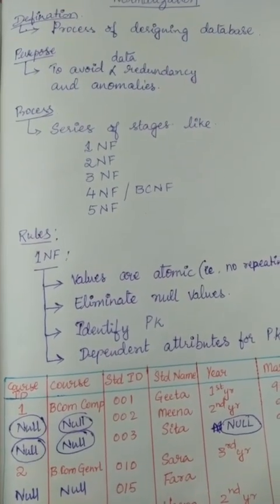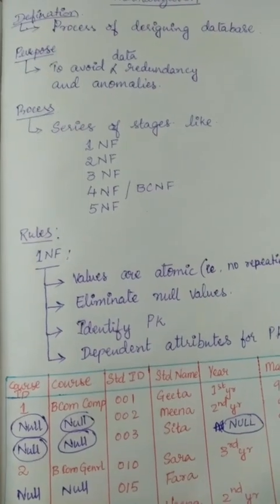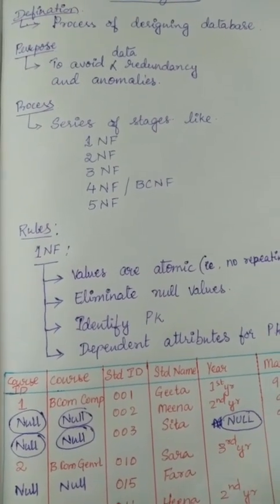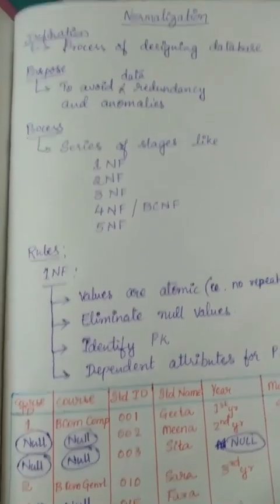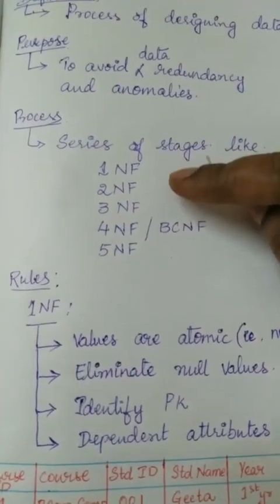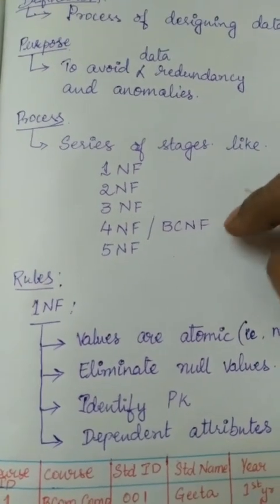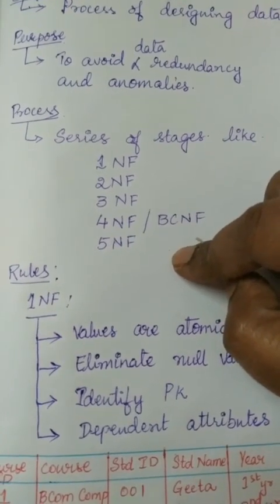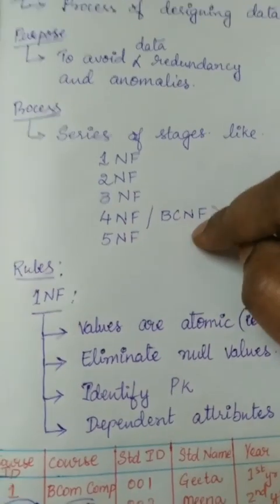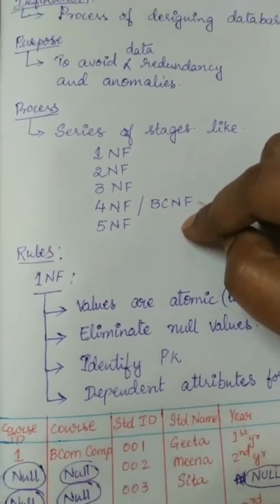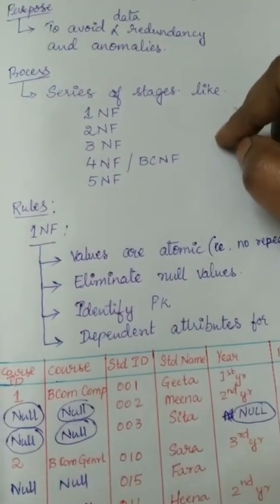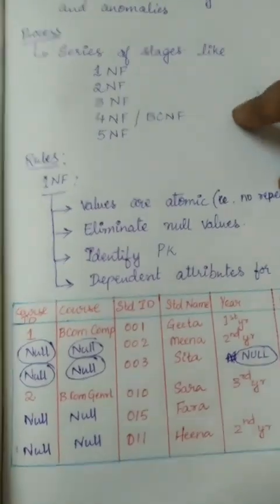What is the process? How do we do database design or normalization? There are different steps or stages in which this is done. A series of stages are followed before designing a particular database. Majorly, we have First Normal Form, Second Normal Form, Third Normal Form, and the fourth is also called Boyce-Codd Normal Form (BCNF), and Fifth Normal Form also exists. Most companies when designing their database generally follow 1NF, 2NF, 3NF, and BCNF. Very few companies follow 5NF, which involves very extensive normalizing of the data.